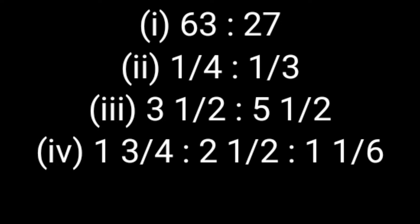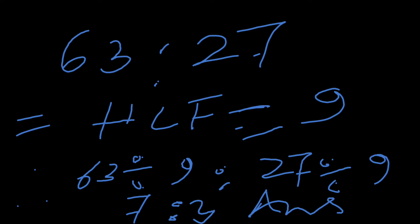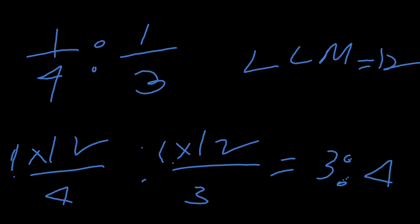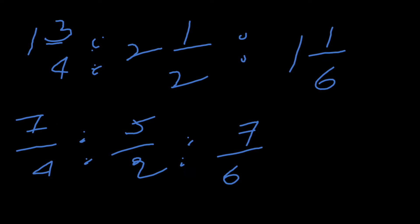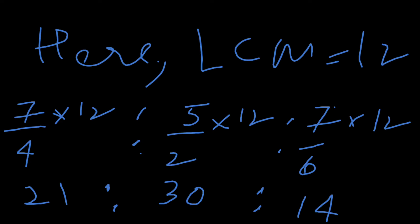The problems are: 63 is to 27; 1/4 is to 1/3; 3 and 1/2 is to 5 and 1/2; 1 and 3/4 is to... For 63 is to 27, the HCF is 9, so you divide them and get 7 is to 3. For 1/4 is to 1/3, the LCM is 12. For 3½ is to 5½, convert to 7/2 and 11/2 — denominators are the same, so the answer is 7 is to 11.